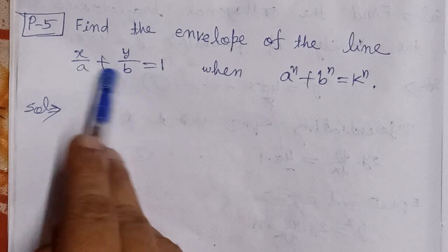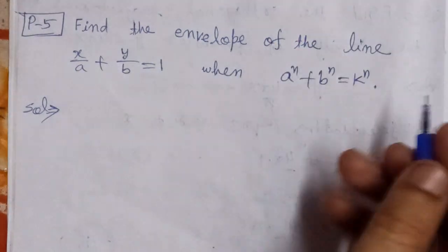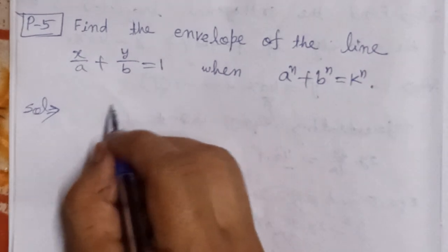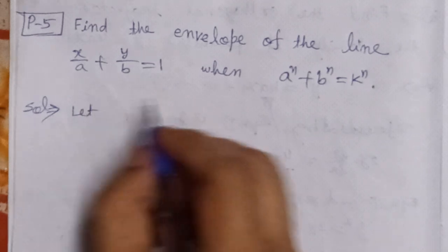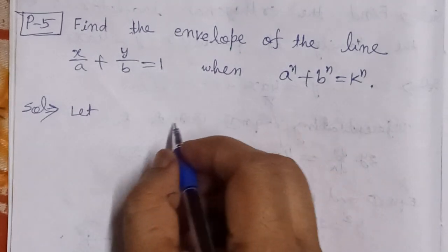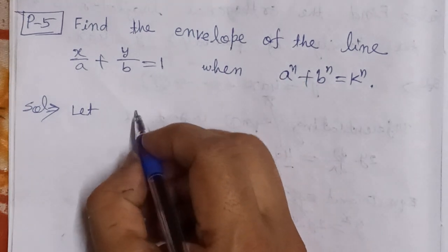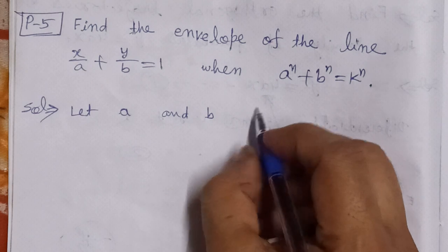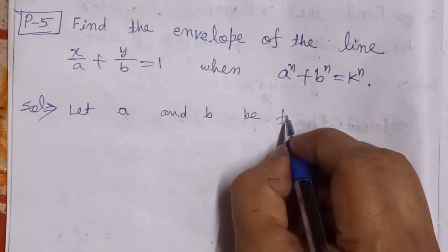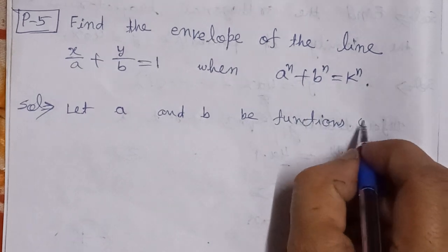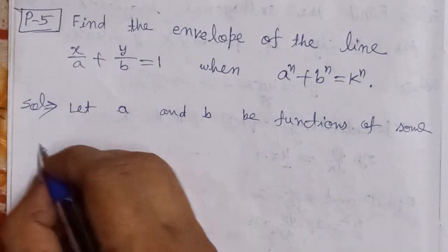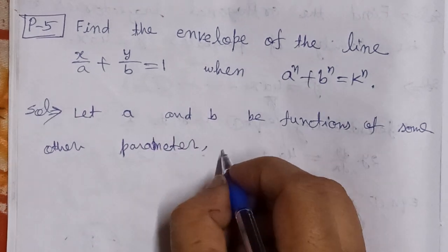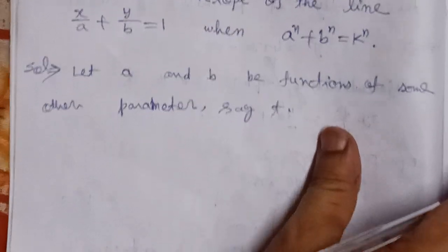In this type of problem where more than one parameter is given, to solve it we need a third parameter. We assume that the given parameters a and b are functions of some other parameter, say t.